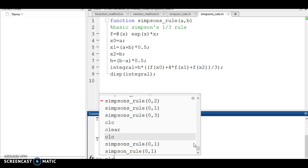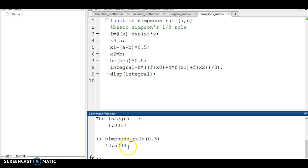So let's calculate the value of the integral in 0 to 3 using Simpson's 1/3 rule. So it is 43.57.